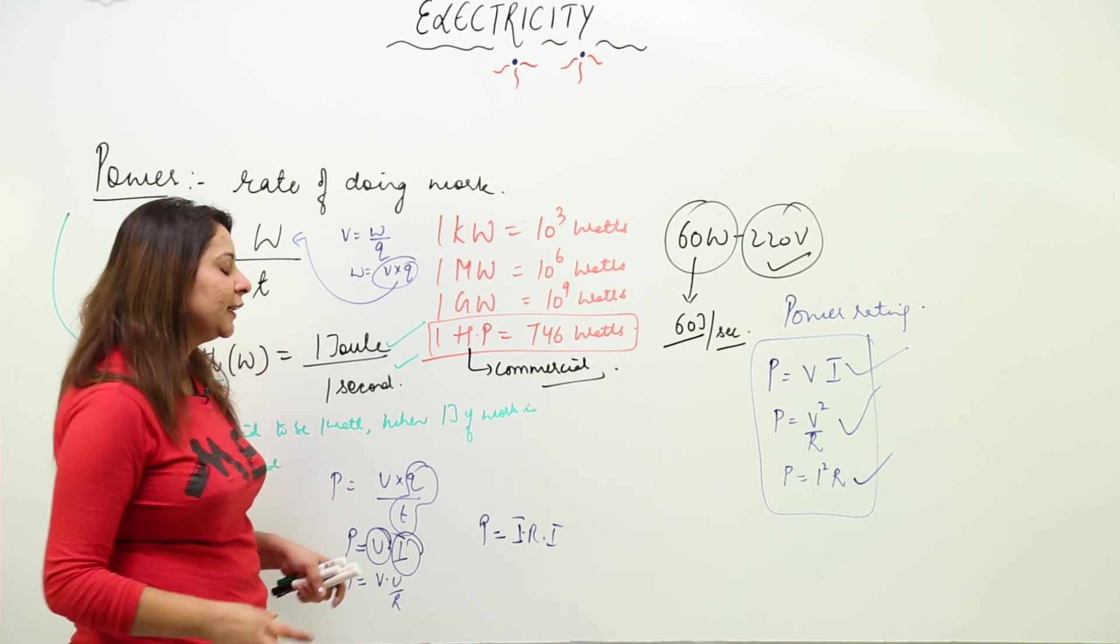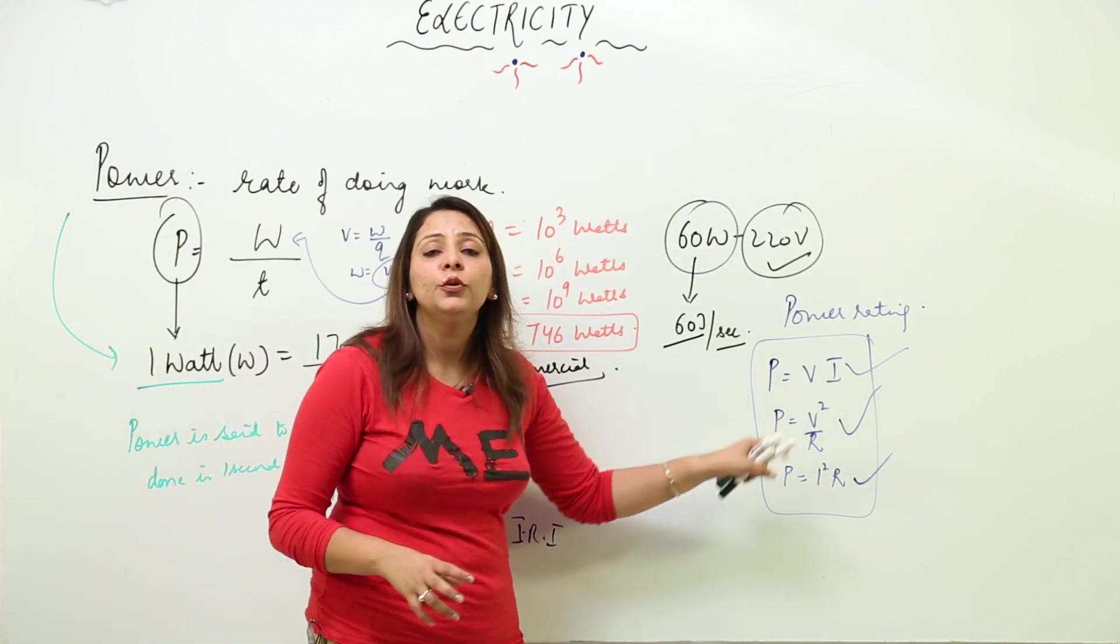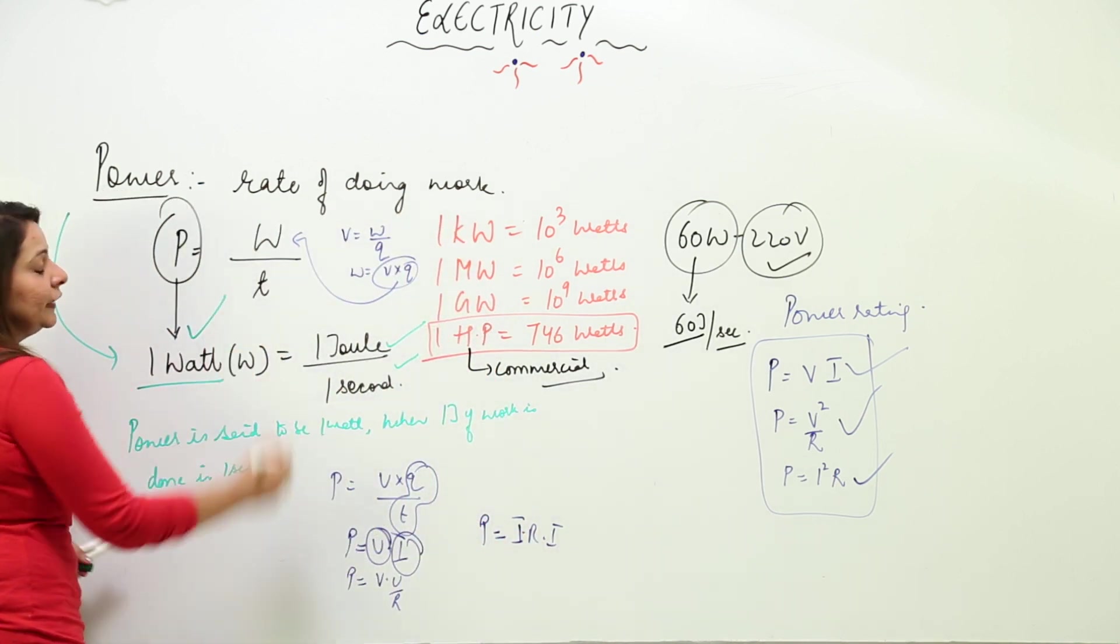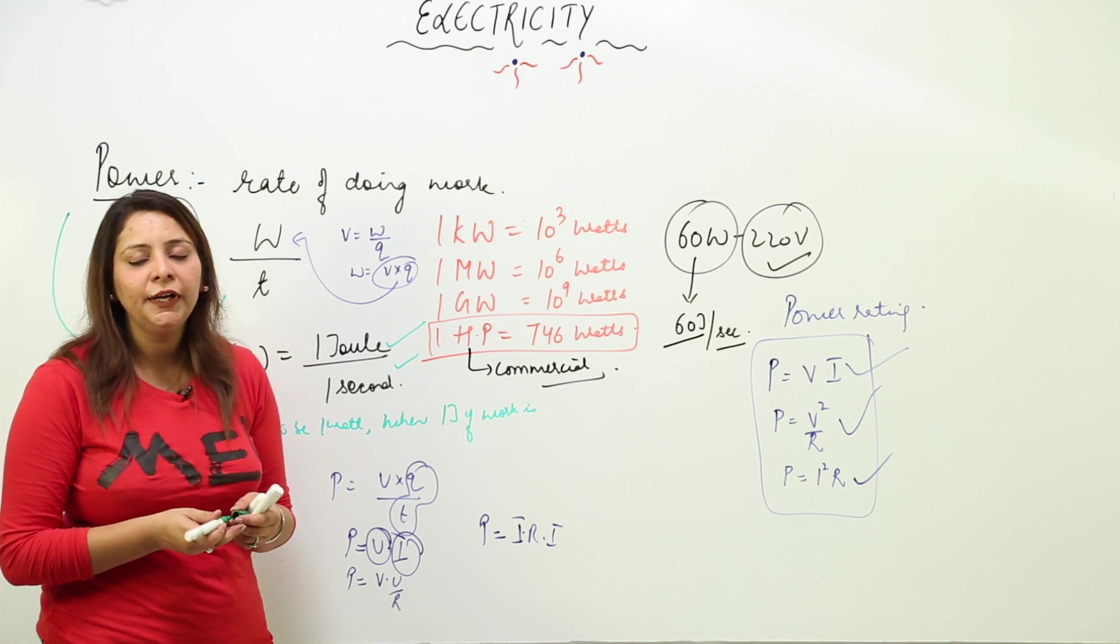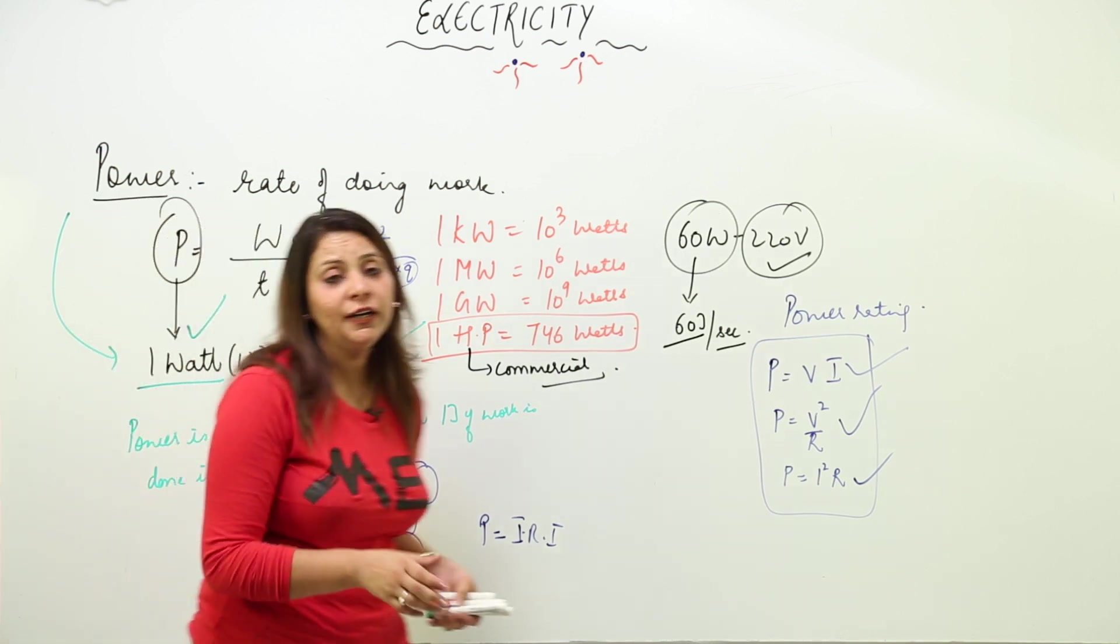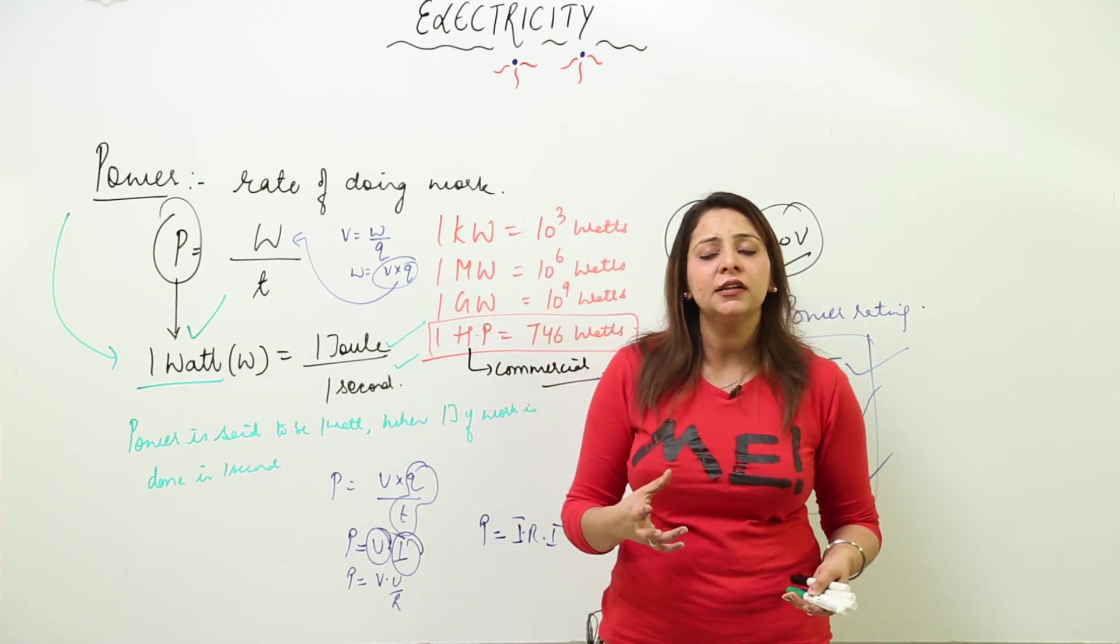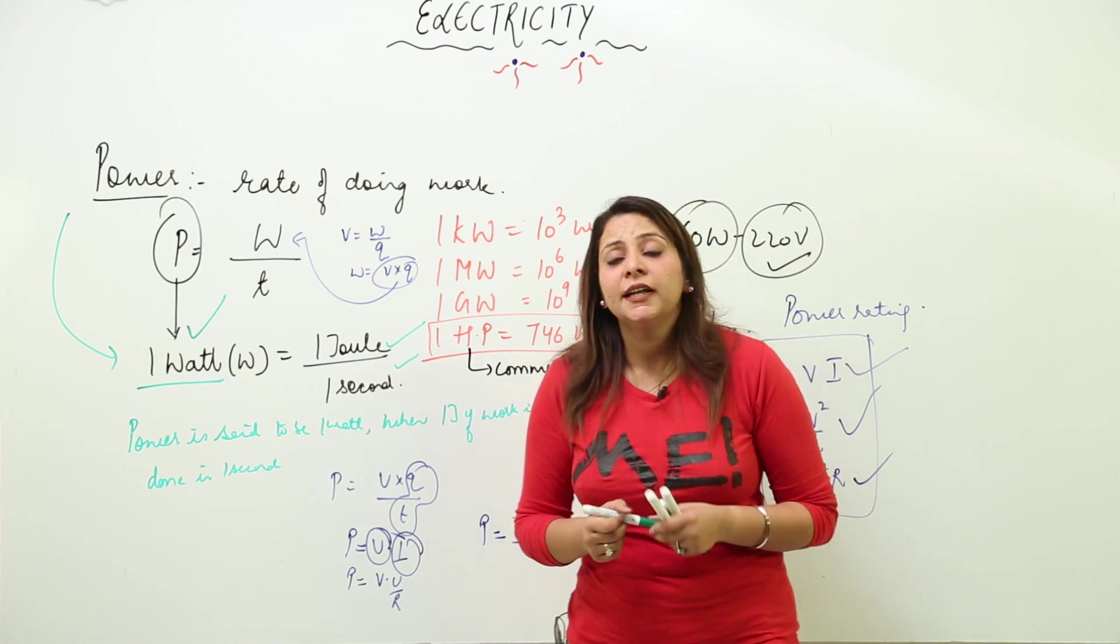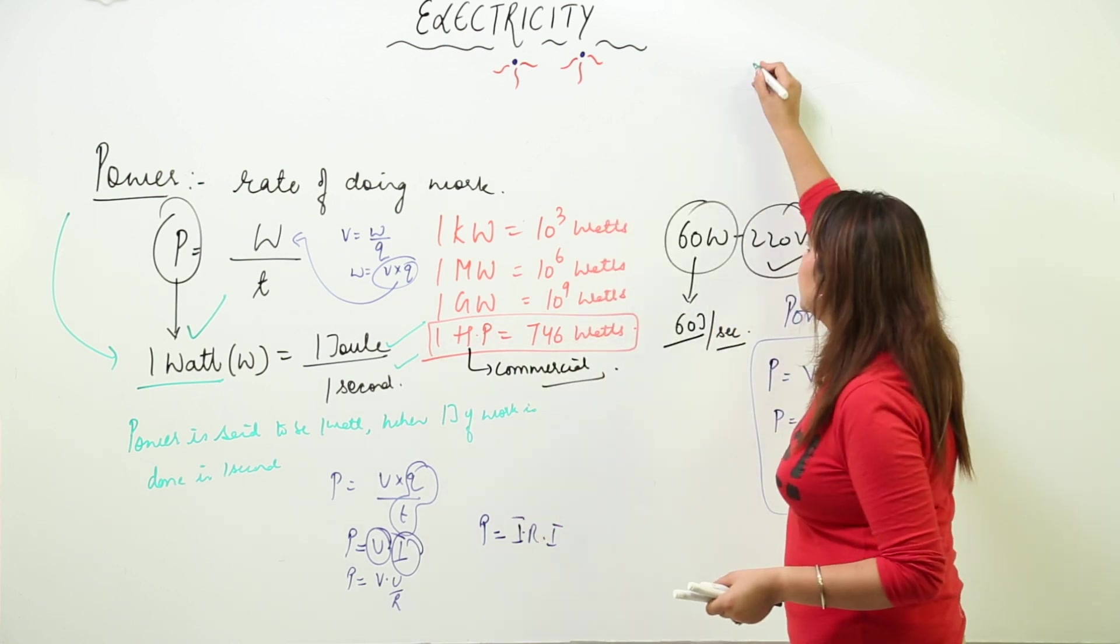When calculating power using these formulas, you need to calculate it in the SI unit, which is watt. Every electric appliance has power, and to measure the electric energy consumed, the commercial unit is kilowatt-hour.